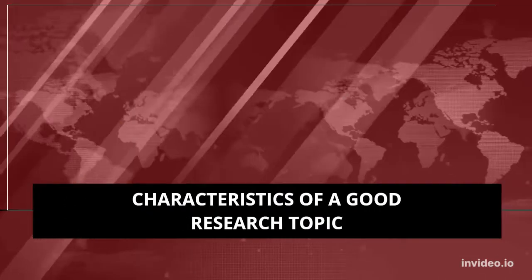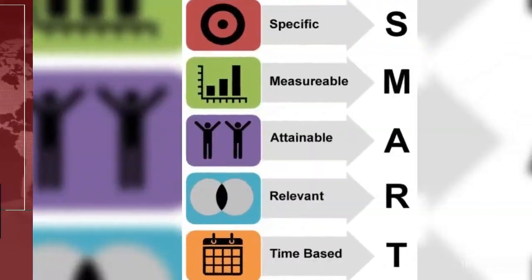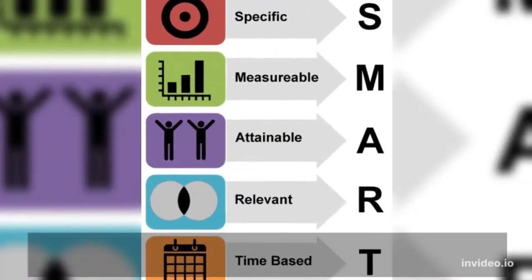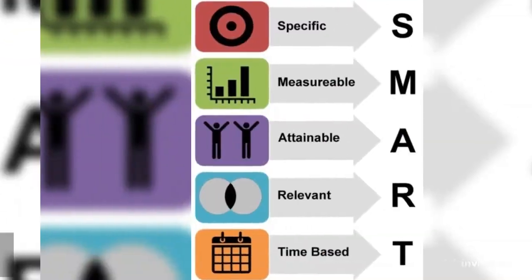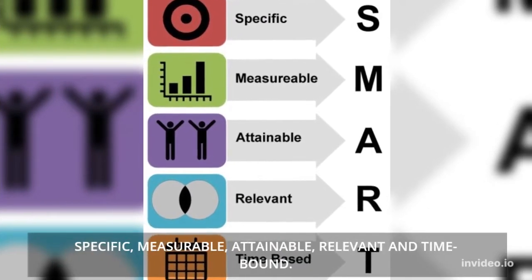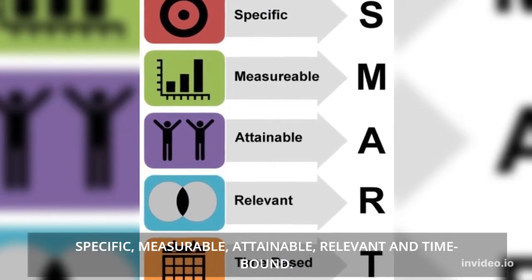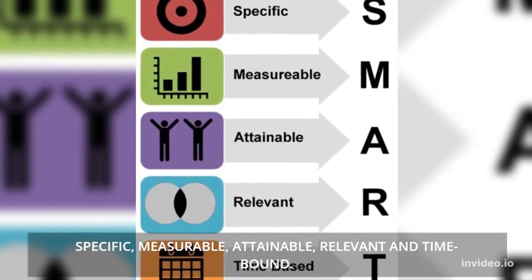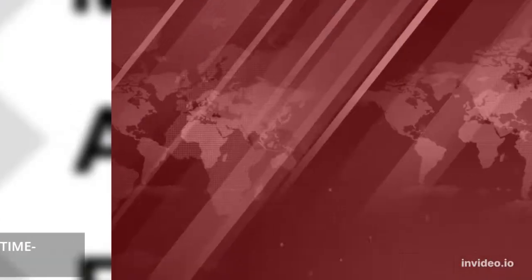Characteristics of a Good Research Topic: It should be SMART — specific, measurable, attainable, relevant, and time-bound.